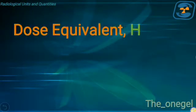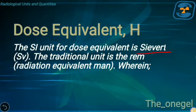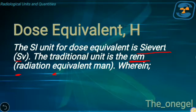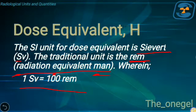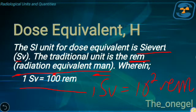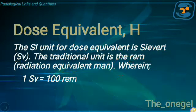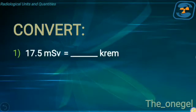The SI unit for dose equivalent is the sievert (Sv). The traditional unit is the rem — which stands for Radiation Equivalent Men: R for radiation, E for equivalent, and M for men. The conversion factor is: for every 1 sievert, there are 100 rem, or 10² rem. We can convert from SI to traditional or the other way around.